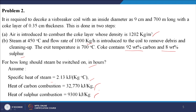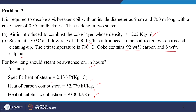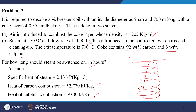In visbreaking, the coil has diameter 9 centimetre. Inside this diameter, coke deposits during the visbreaking process — on both sides inside the tube the thickness is 0.35 centimetre and the length is 700 metre. Once visbreaking is completed, we must remove the coke from inside the coil before reuse.